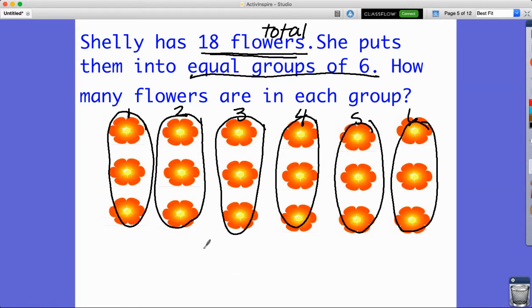Now I want to think about whether this problem would best be modeled with a division equation or a multiplication equation. It can be modeled by both, but I want to think about what the word problem is actually asking. It gave me 18, a total number of flowers, and wanted me to put them in equal groups of six.